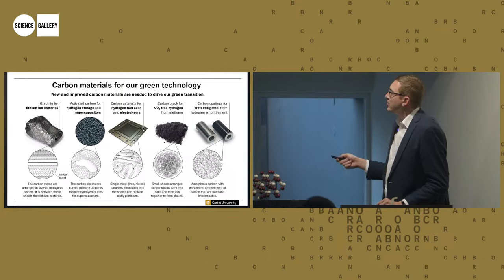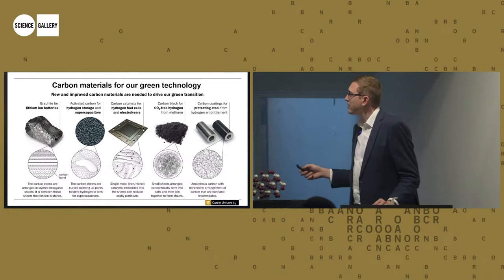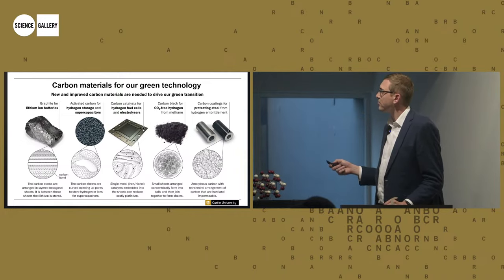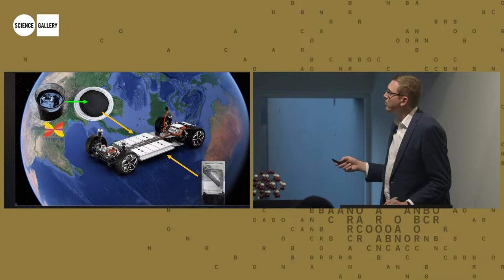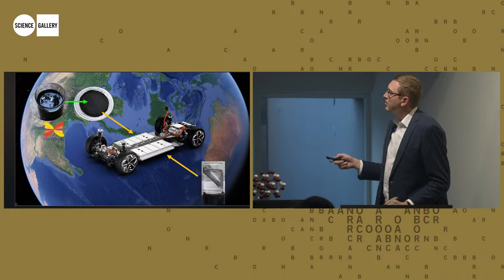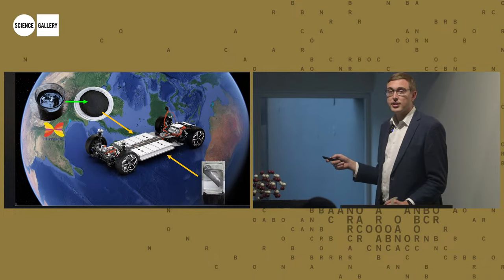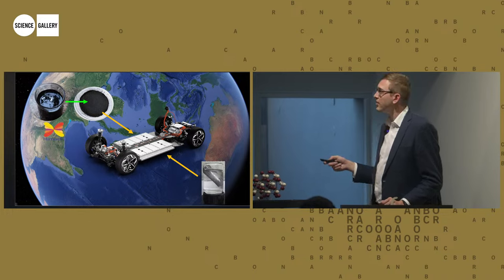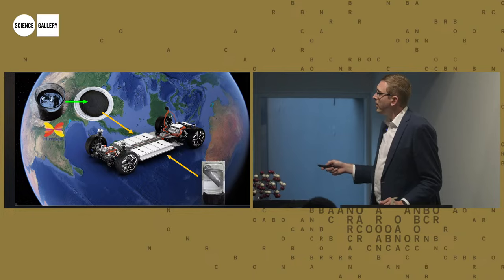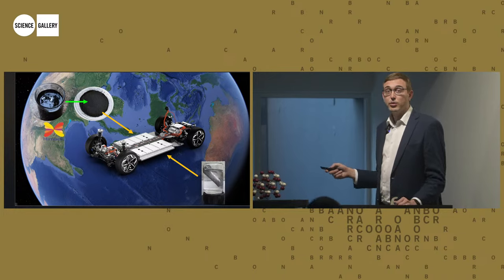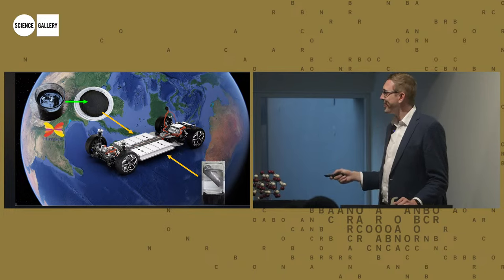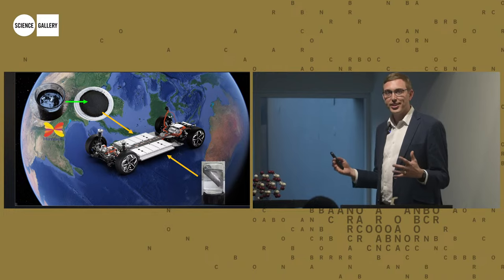And so a lot of the work that we do in the Curtin Carbon Group is focused on the fundamental science, but applying that to enabling our green technology. So instead of burning carbon, putting it into the atmosphere, how can we embed it into the green technology that we need in order to decarbonise? So using carbon to decarbonise. So the batteries, supercapacitors, fuel cells. We're also looking at taking the carbon out of fossil fuels and making black pigments, like carbon black. And then also using carbon to protect materials from hydrogen. And something that we've been working on with an Indian company, Himadri, which is actually one of the only companies in the world that's able to turn coal into a liquid that can turn into graphite.